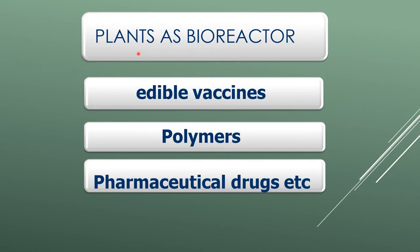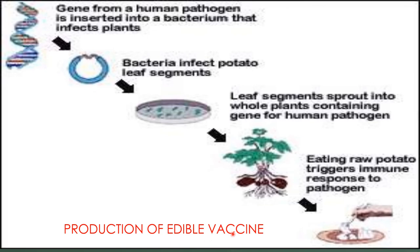Metabolic engineering also uses plants as a bioreactor for the production of edible vaccines, polymers, and pharmaceutical drugs. For production of an edible vaccine, the gene for a human pathogen is inserted into a bacterium that infects the plant. This bacterium infects a potato leaf segment, which then sprouts into a whole plant containing the gene of the human pathogen. If we eat the raw potato, it triggers an immune response to the pathogen — this is how we can produce edible vaccines.